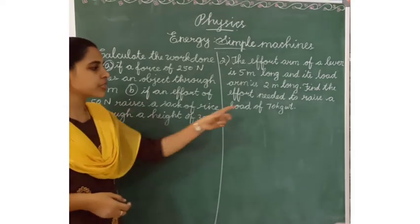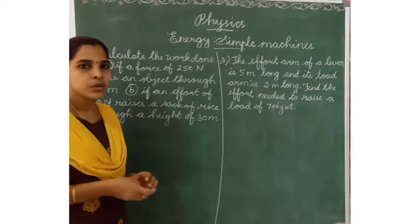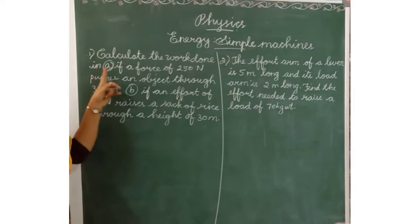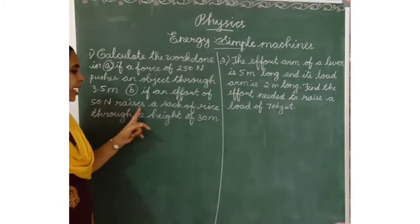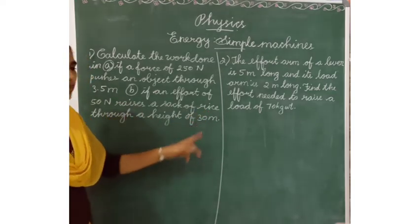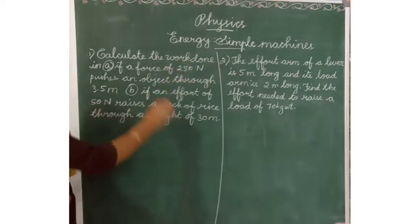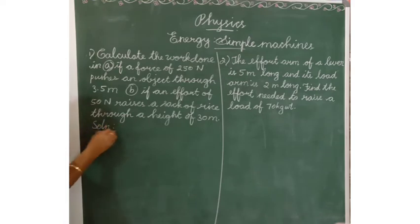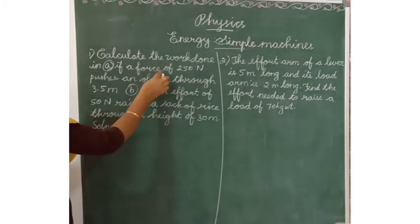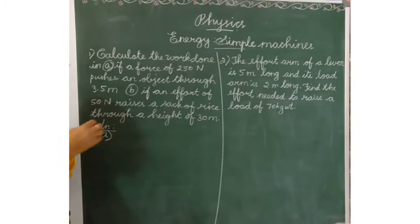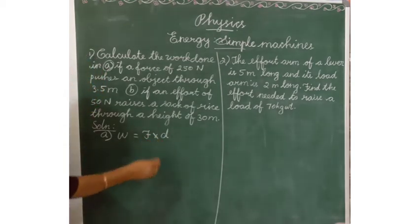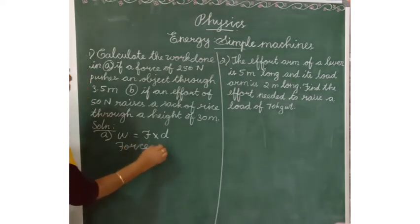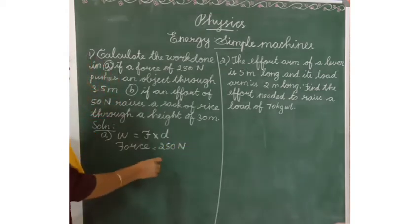Now we will do some numerical questions — copy the answers and questions in your booklet. Question A: Calculate the work done if a force of 250 Newton pushes an object through 3.5 meters. The formula is: Work done = Force × Distance. Force = 250 Newton, Distance = 3.5 meters.